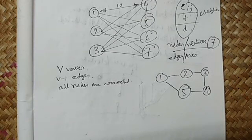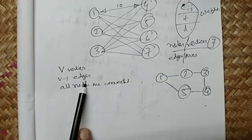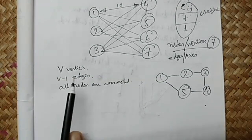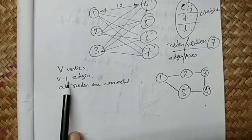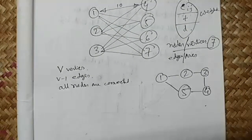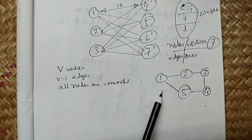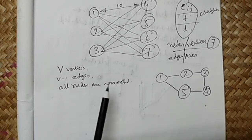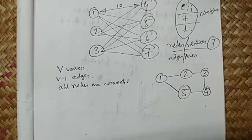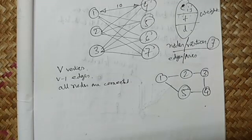If there are five nodes but five edges, that violates the condition. The number of edges should be one less than the number of vertices. Whenever a cycle forms, it can never be a tree. A tree means there will be no cycle. So if there are v vertices, the edges must be v-1 and all nodes must be connected.